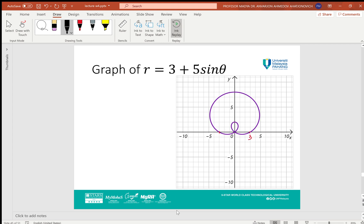For example, r = 3 + 5 sin θ. First, you can see here when θ = 0, R = 3. When θ = π/2, it will be 8.